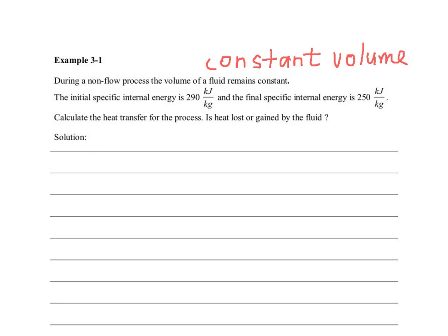You are told the initial specific internal energy is 290 kilojoules per kilogram and the final specific internal energy is 250 kilojoules per kilogram. You are given the specific internal energy at the final and the initial, so we know the change.